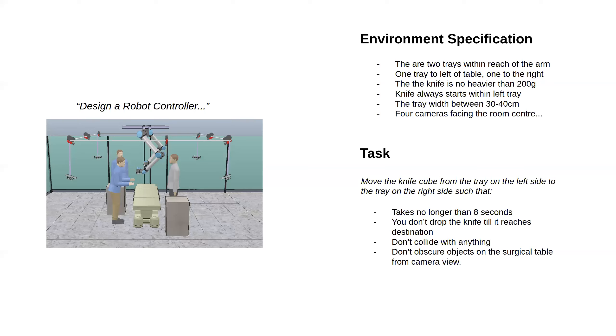But there's also this slightly less talked about thing called the environment specification, which is the description of all the environments and variations and ranges in which I can reasonably expect this algorithm to work. You might say there's two trays within reach of the arm, one to the left and one to the right, the knife is no heavier than 200 grams, the knife always starts within the left tray. How do I get confidence that it works in the variety of environments I've laid out?